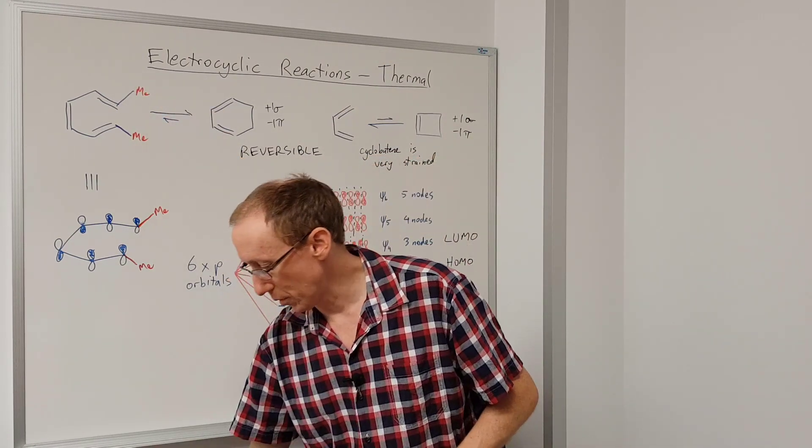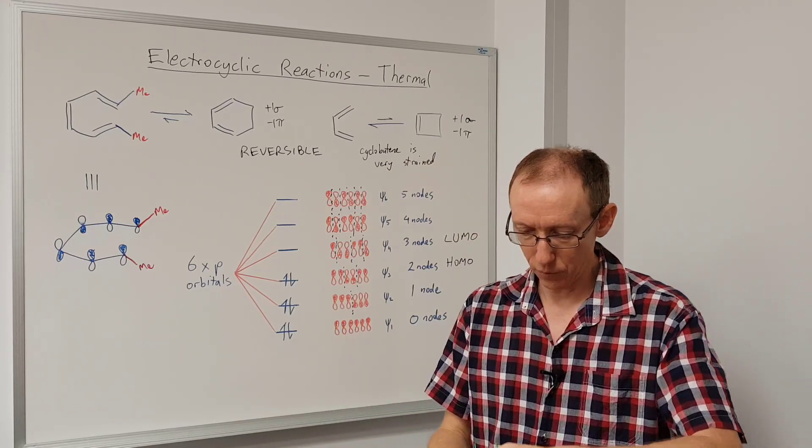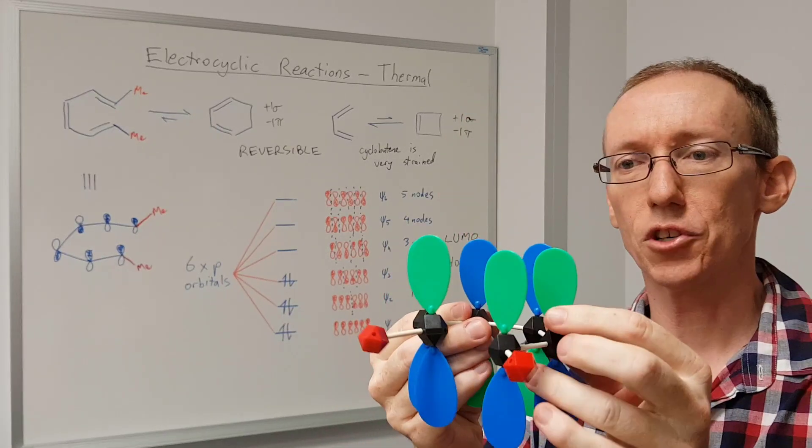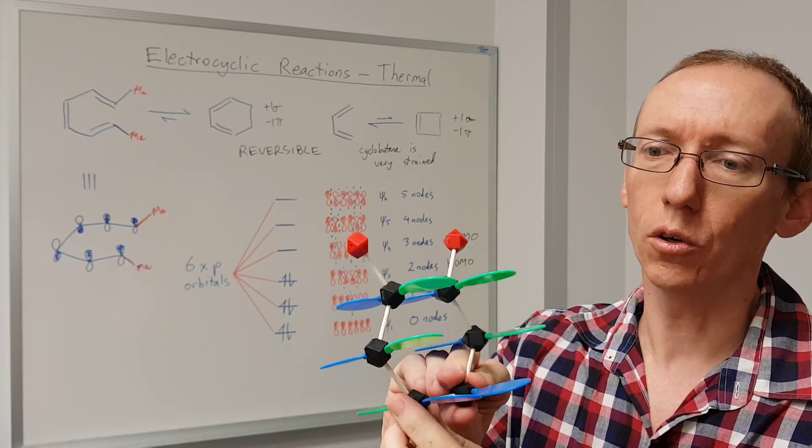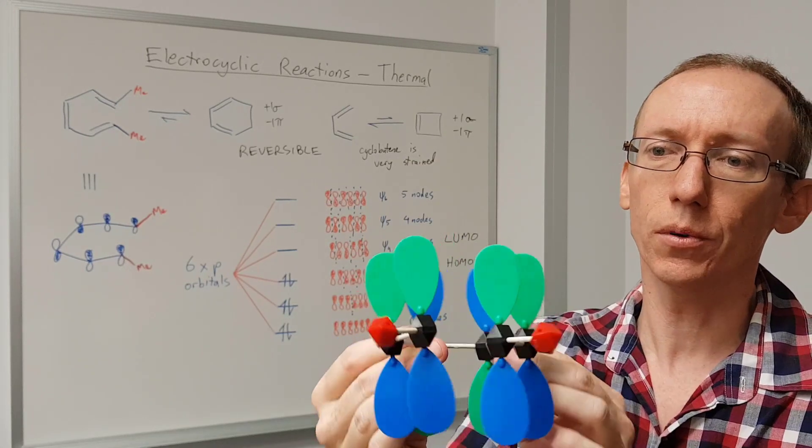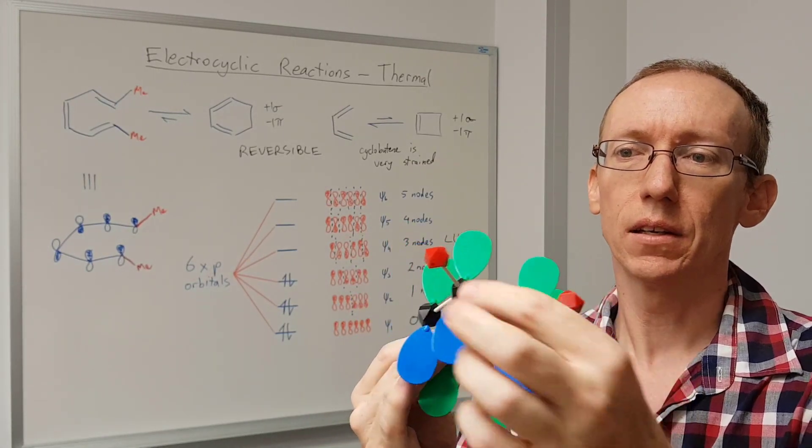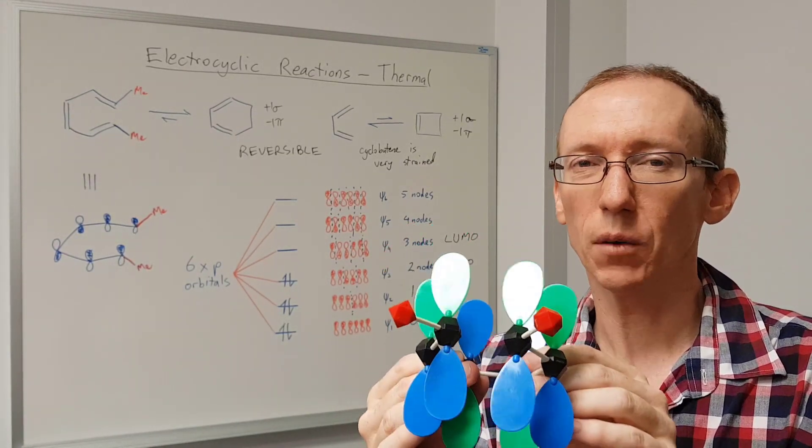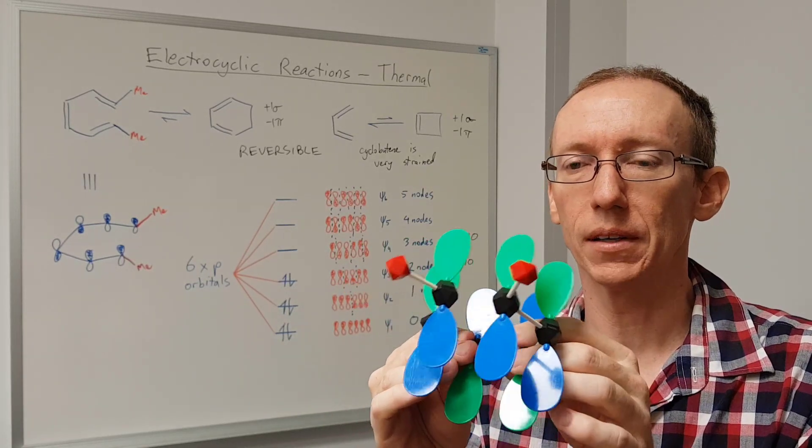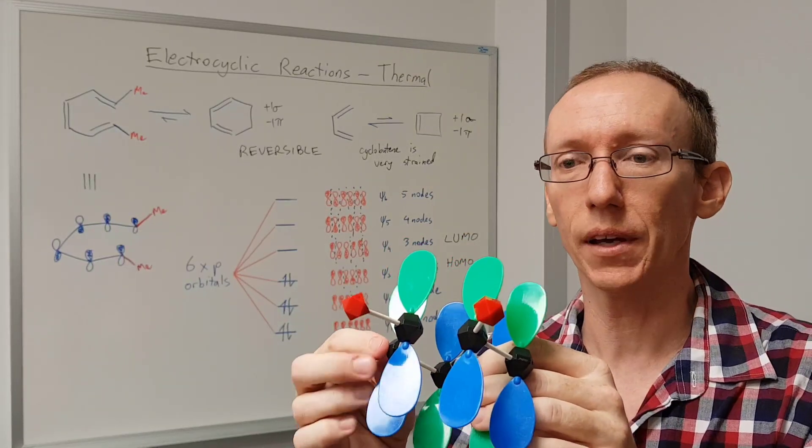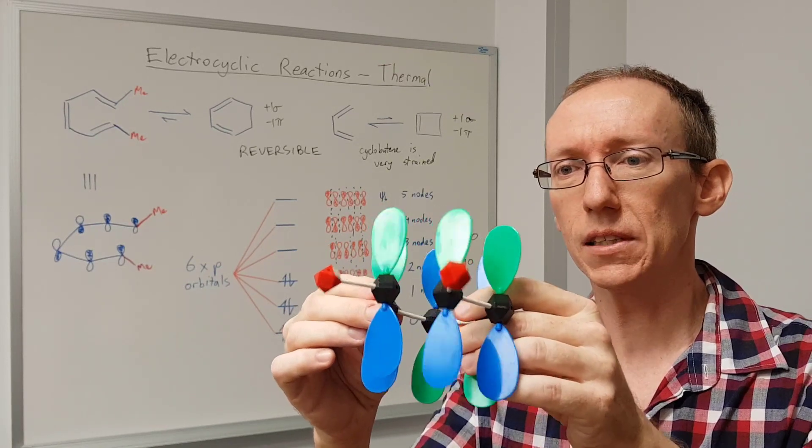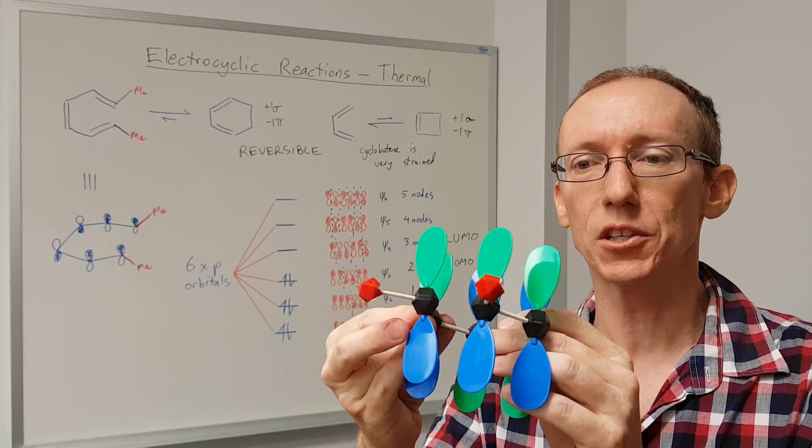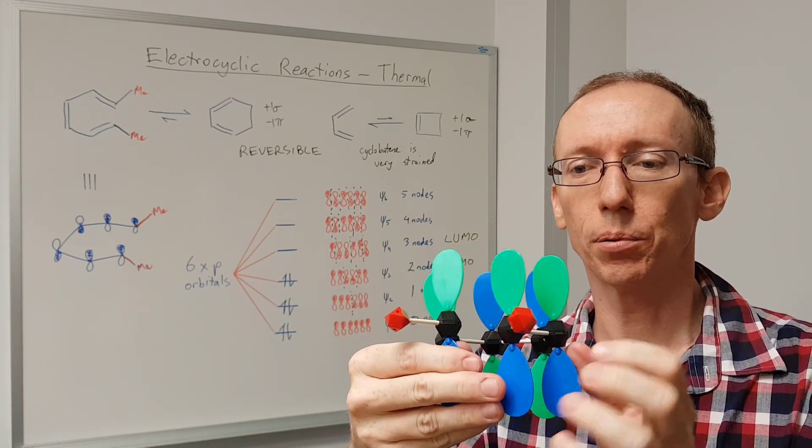So I've got a model here, and it's got the full pi system of this hexatriene. So we've got all six of those p orbitals overlapping, and then I've got these red atoms here. They're just representing a methyl group. We wouldn't normally use red for a carbon group, but it makes it easier to follow with our diagrams there. So if we look at this model, we need to get the pi orbitals to overlap in phase with each other during the reaction that leads to the product.